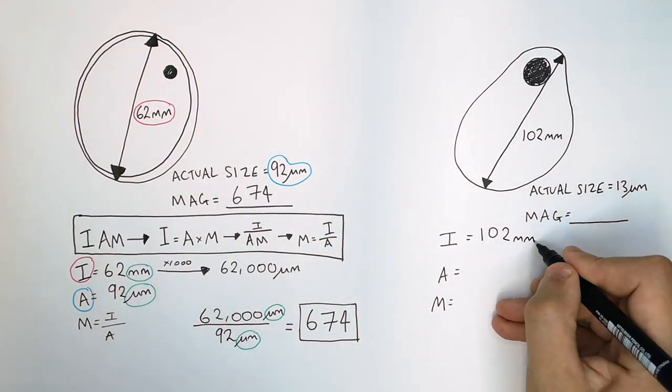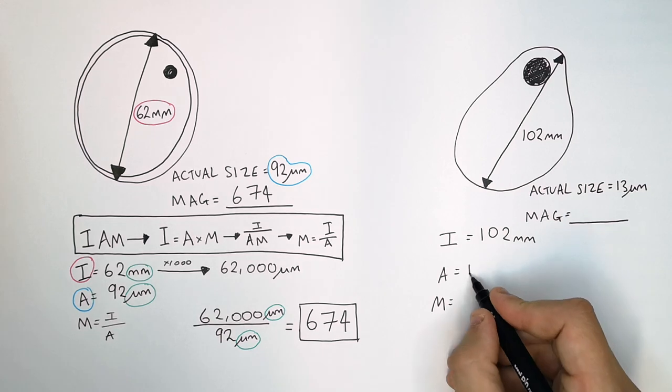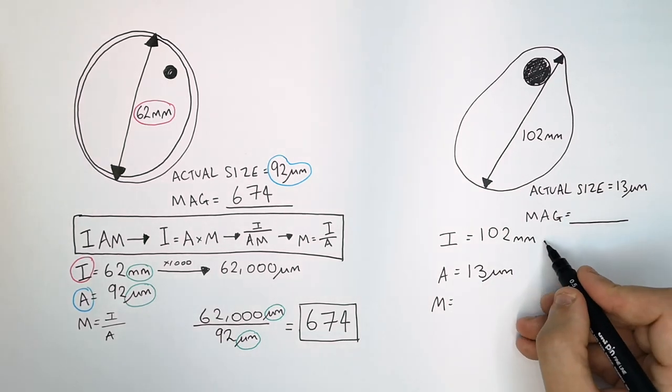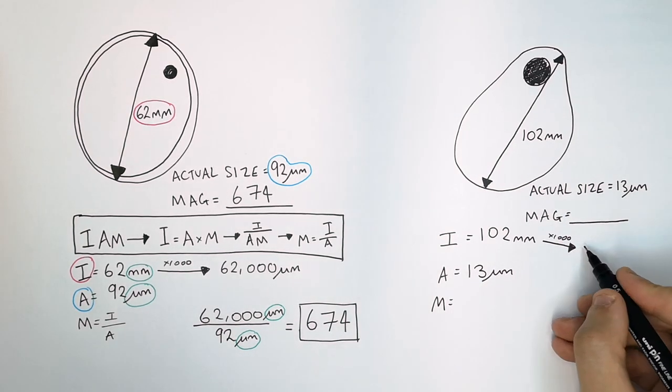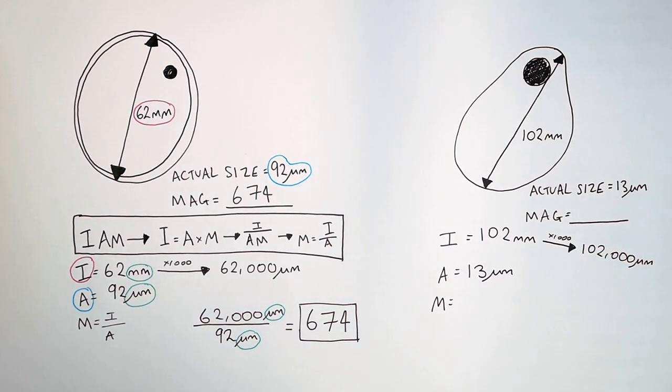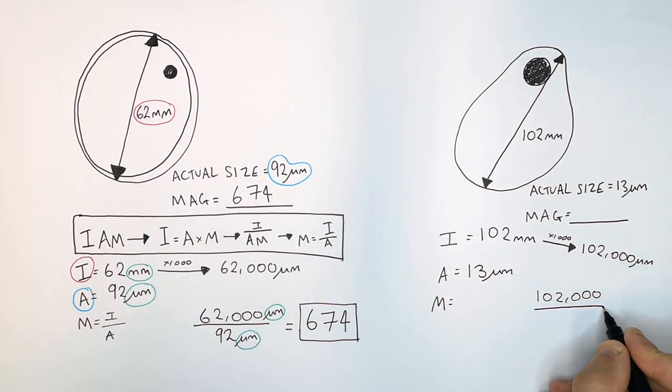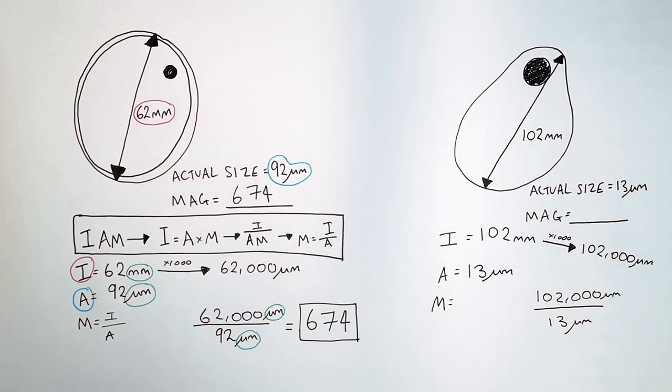You've got I, which is 102 millimeters. You've got A, which is 13 micrometers. You convert the image size into micrometers by timesing by 1000. You can now divide the image size by the actual size in the same unit of micrometers. Gives you a magnification of 7846.